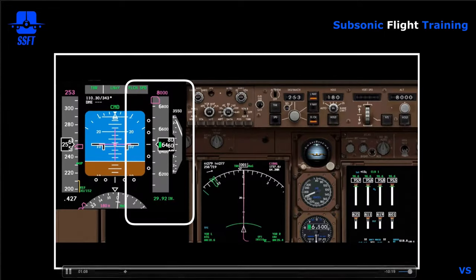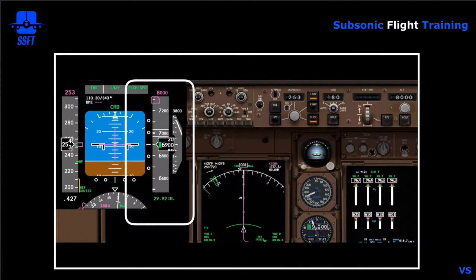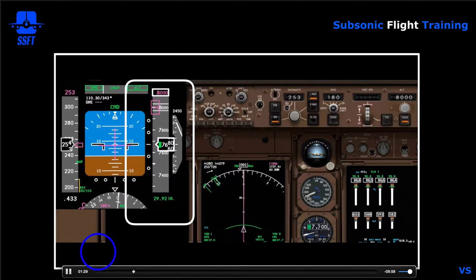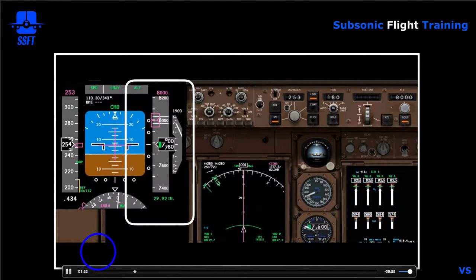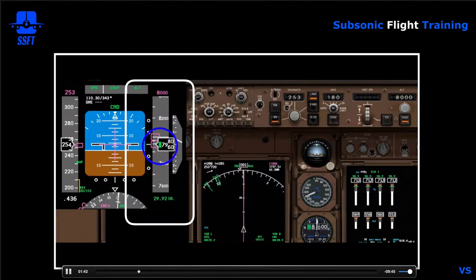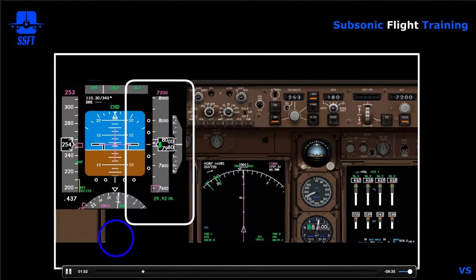Continuing the climb, at 900 feet before the selected altitude you'll see a thicker white box appear around the current altitude display, and a white box around the selected MCP altitude. When you get within 300 feet, the current altitude box returns to normal and the selected altitude box disappears. Depending on airline options, you may also get an audible horn at 900 feet — I've enabled that option in this simulator, so you may have heard it in the background.